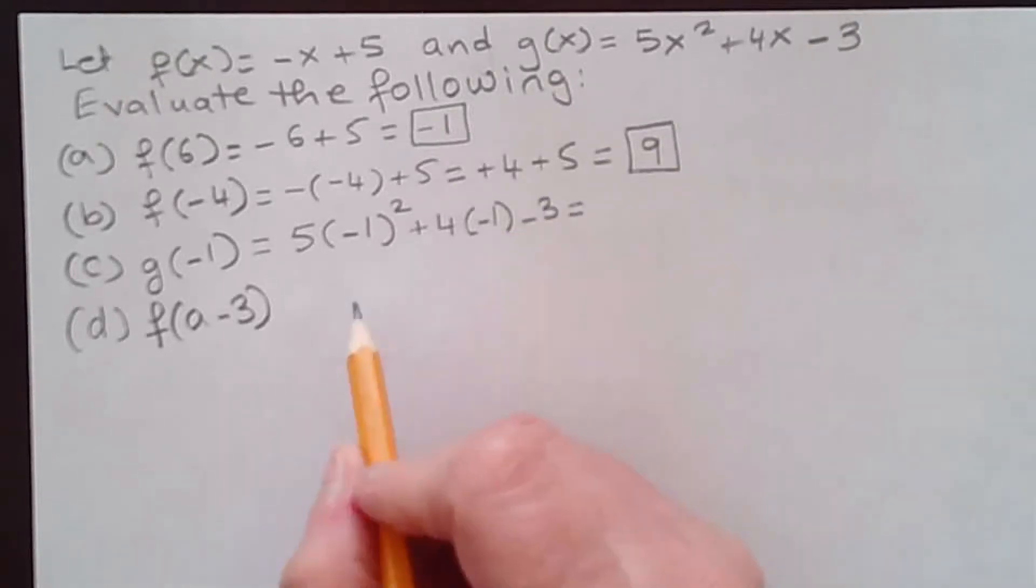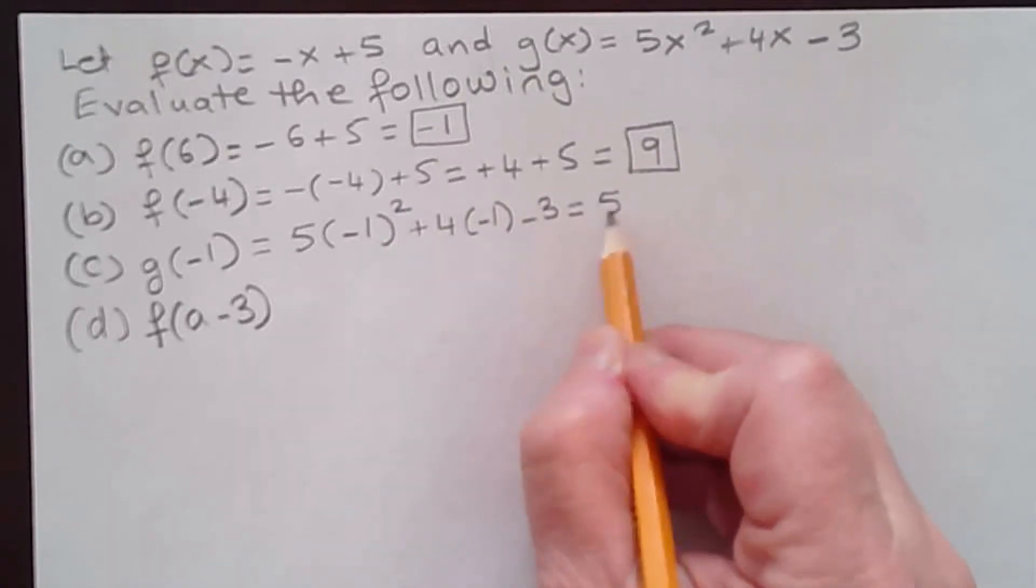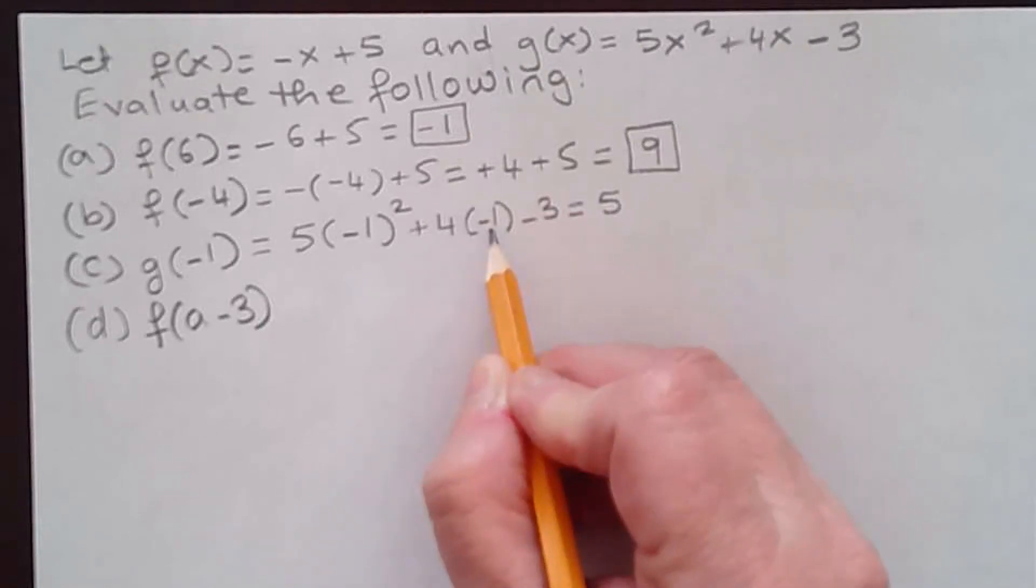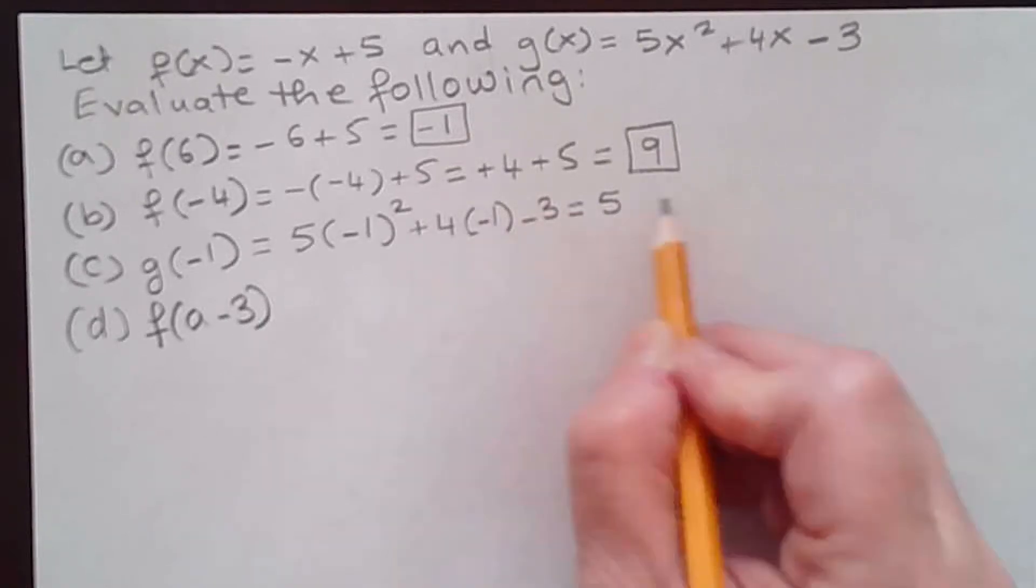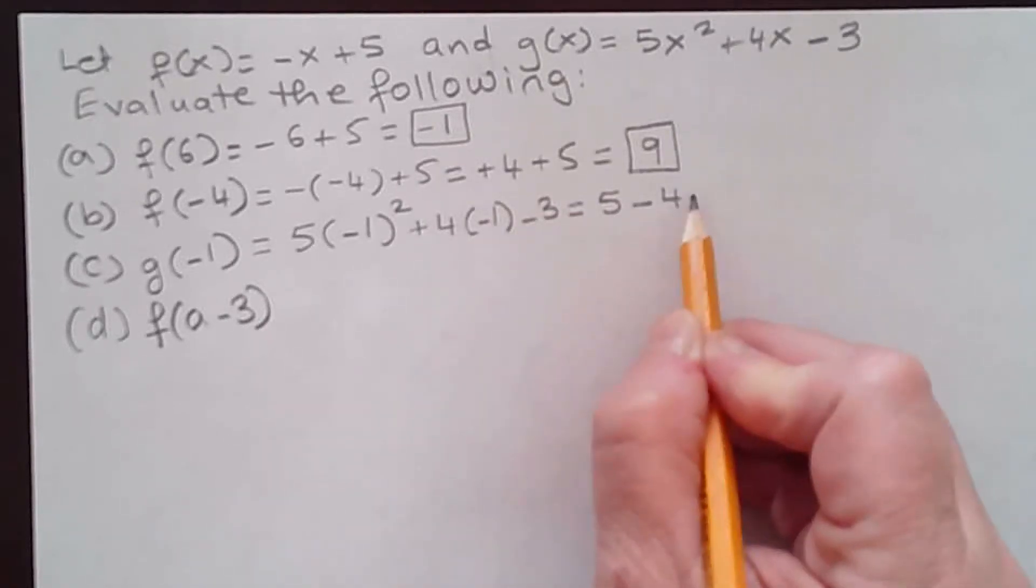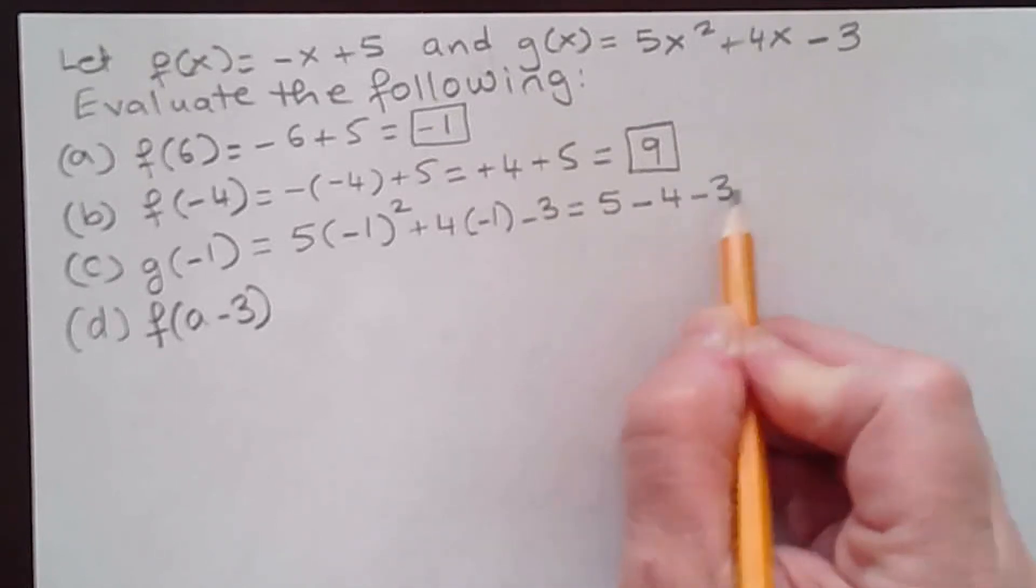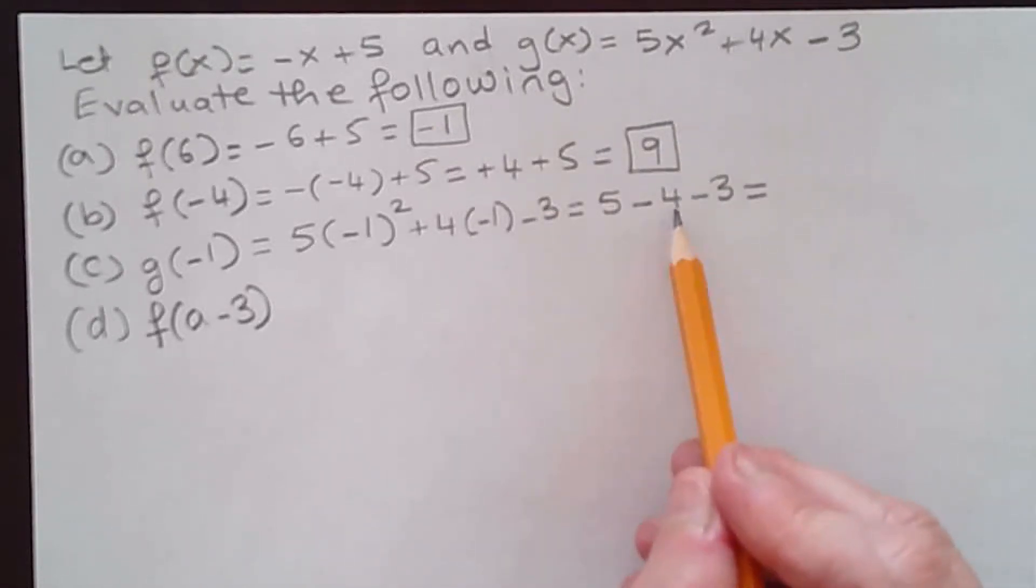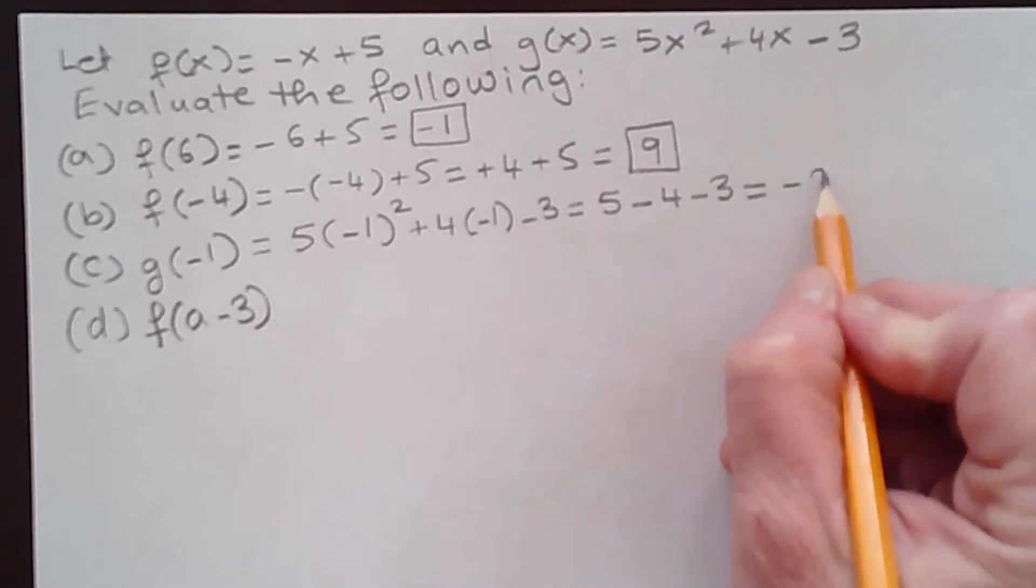That gives us (-1)² which is just 1, and 1 times 5 is 5. 4 times -1 is -4, so we have 5 - 4 - 3. 5 - 4 is 1, and 1 - 3 is -2.